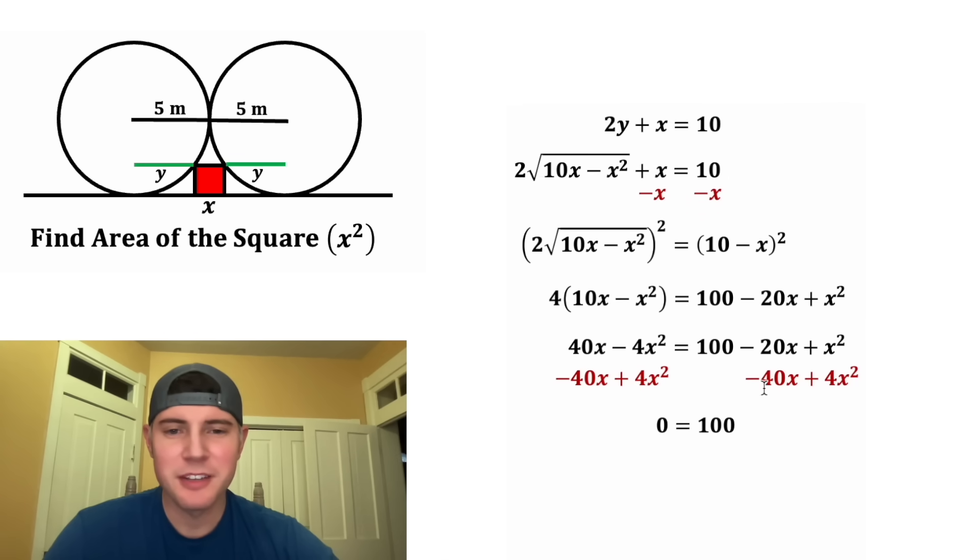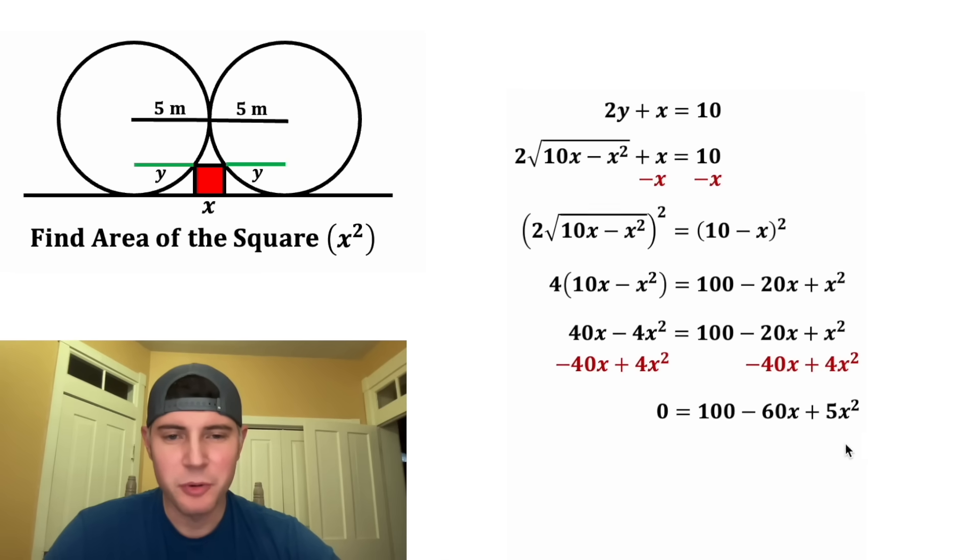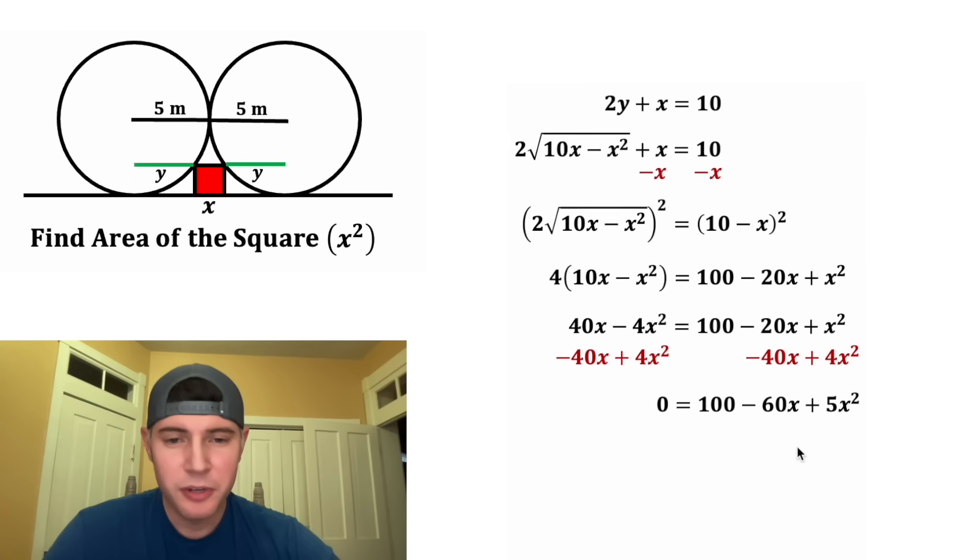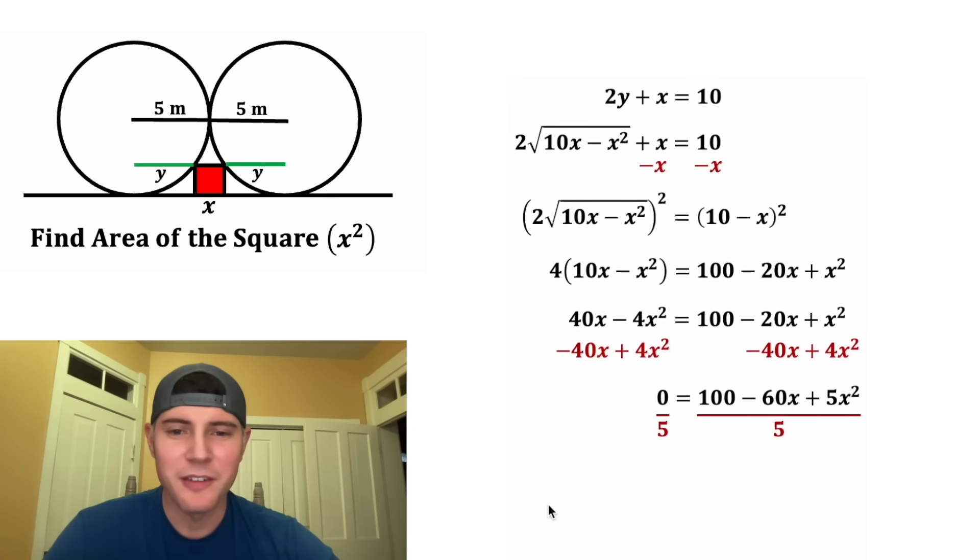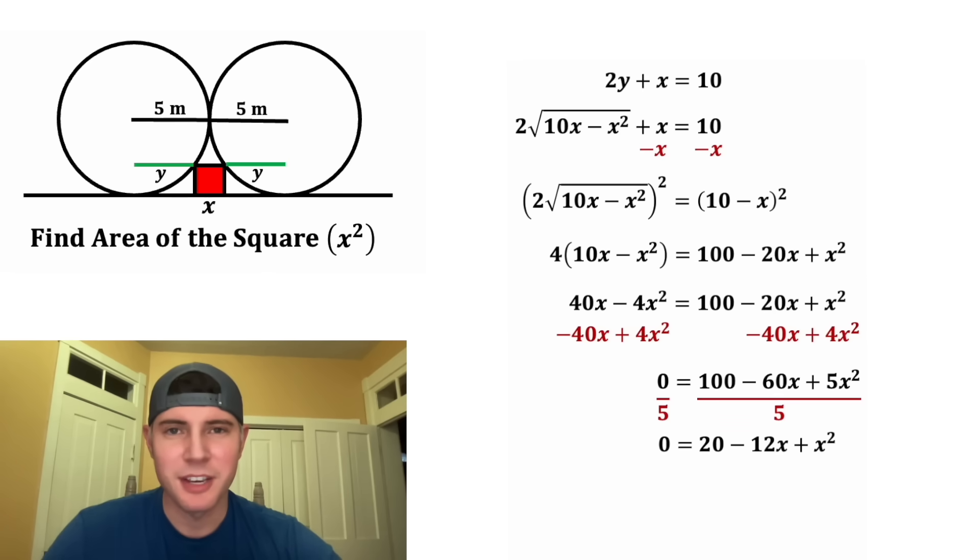Let's bring down the 100. Negative 20X minus 40X is negative 60X. And X squared plus 4X squared is 5X squared. All three of these coefficients are divisible by five, so let's do that. We end up with zero equals 20 minus 12X plus X squared.